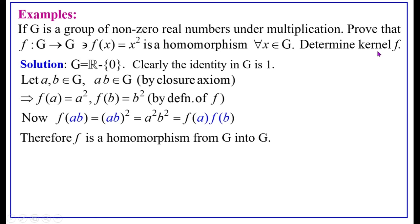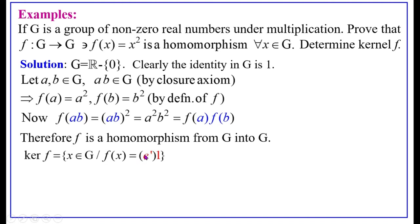Now we determine ker(F). By definition, ker(F) is the set of all X in G such that F(X) equals E', the identity element of the co-domain group. Here the co-domain group is also G, the non-zero real numbers under multiplication, so the identity is 1. Therefore we need F(X) equals 1.